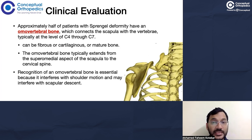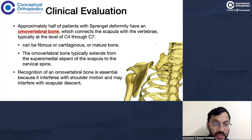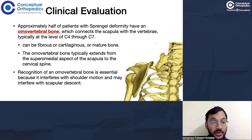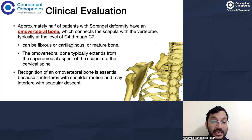The omovertebral bone is a connection between the scapula and the vertebrae, typically at the level of C4 to C7. This connection can be fibrous, cartilaginous, or well-formed bone, extending from the superior medial border of the scapula to the cervical spine. Recognition of this bone is essential because it interferes with shoulder motion and may also interfere with scapular descent.